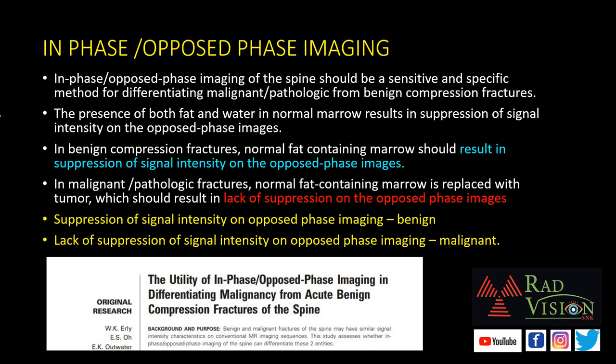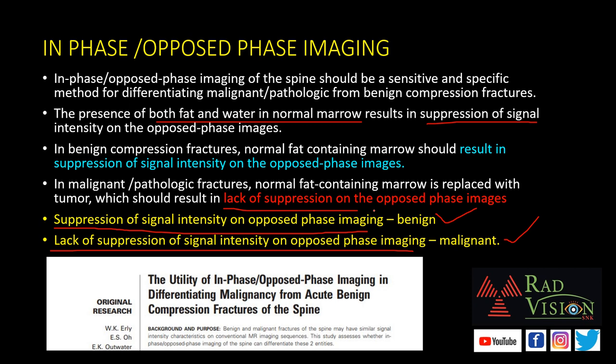In-phase or opposed-phase imaging: the presence of both fat and water in normal marrow results in suppression of signal on opposed-phase imaging. This is the important point helping to differentiate benign from malignant fractures. Suppression of signal intensity on opposed-phase imaging favors benign compression fractures, whereas lack of suppression of signal intensity on opposed-phase imaging favors malignant compression fractures — because in malignant compression fracture, the normal fat-containing marrow is replaced by abnormal tumour cells, causing lack of suppression on opposed-phase imaging.